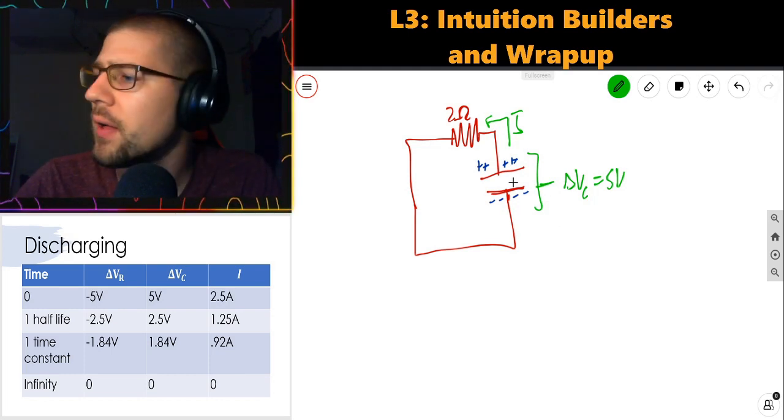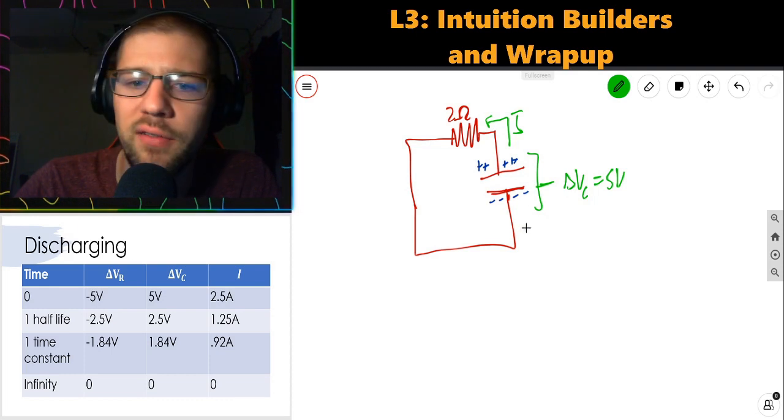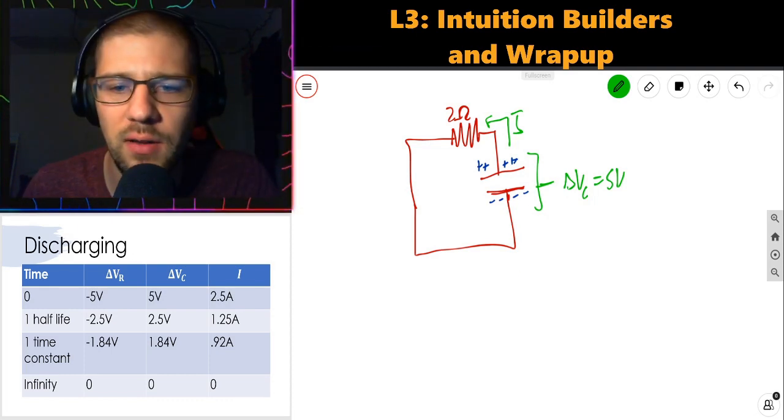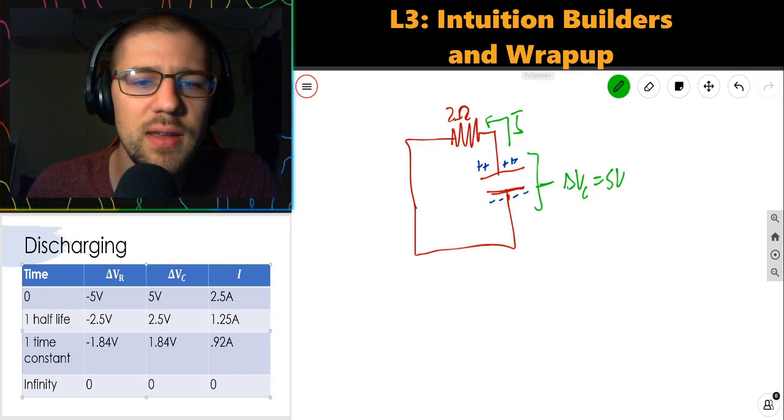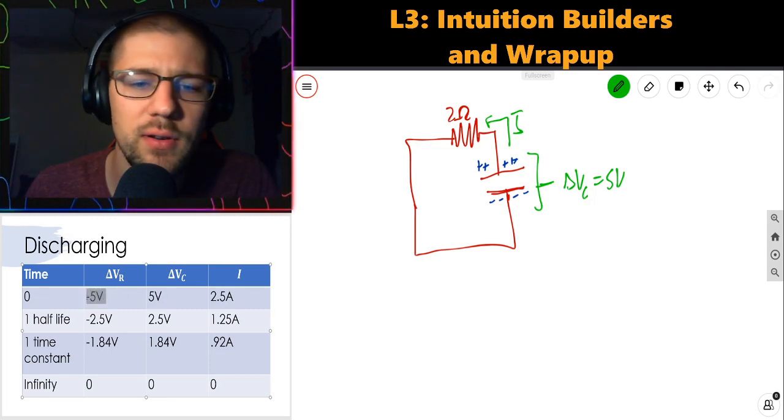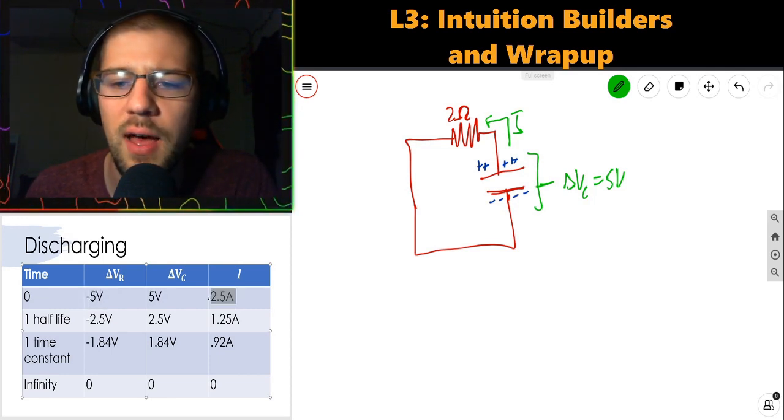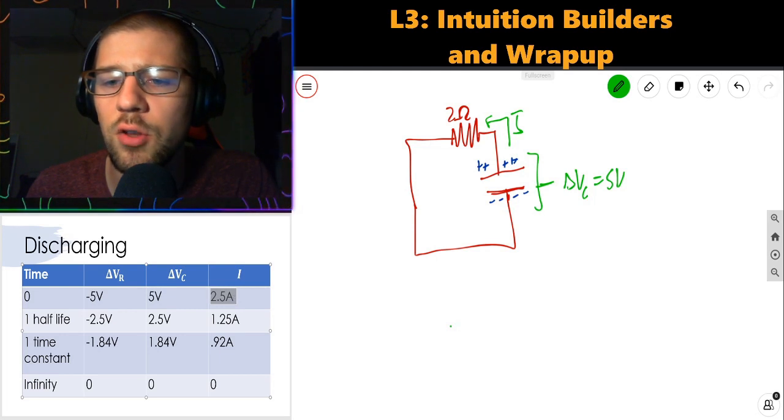At time T equals 0, the capacitor is supplying 5 volts. Notice it's now positive in our chart, 5 volts. But the resistor has to take all of that voltage. And again, using Ohm's law, we find a current of 2.5 amps.